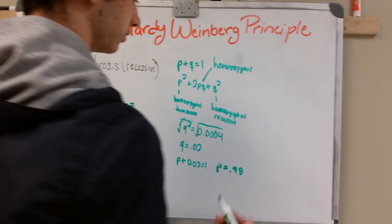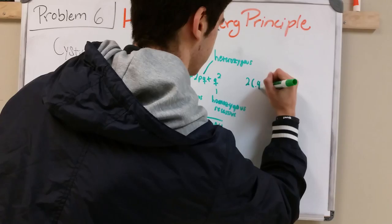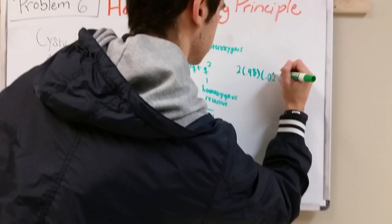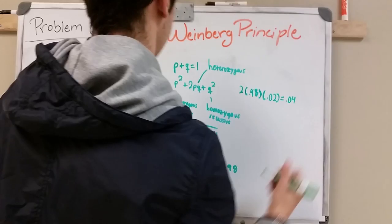So we do that. 2 times 0.98 times 0.02. And this equals 0.04. That's 4% or around 4%. So all you have to do is put in the answers.